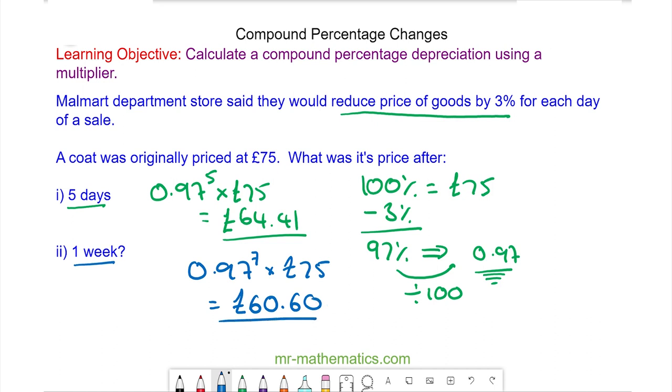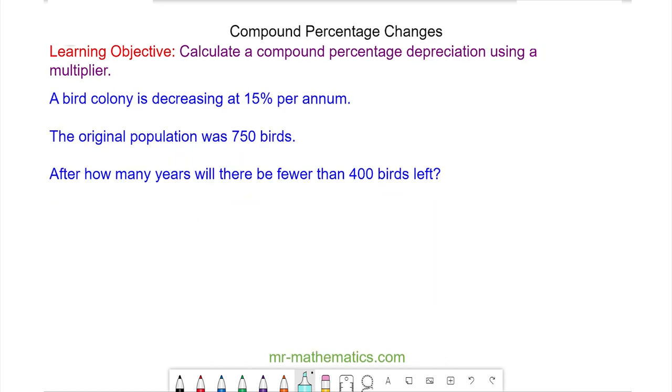Okay let's try one more question. A bird colony is decreasing at 15% per annum. The original population is 750 birds. After how many years will there be fewer than 400 birds left? This is slightly different to the questions we've been doing but the method remains the same.